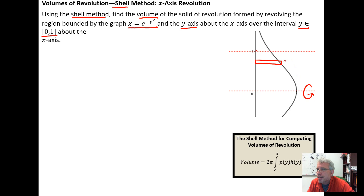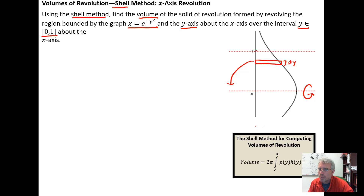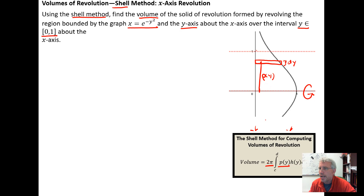Right away I recognize that these are dy slices, and I need to know two other things. I need to know the circumference of revolution — calculated as 2π times the radius. I also need to know the radius, rho, as a function of y, and the height of each cylinder as a function of y, because I'm taking dy slices.